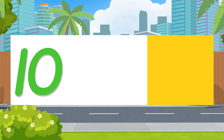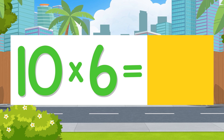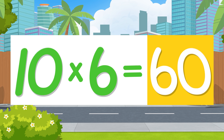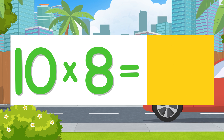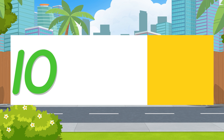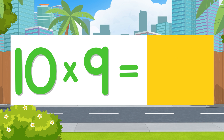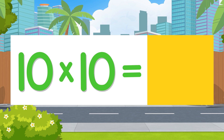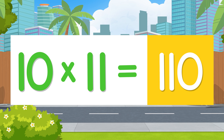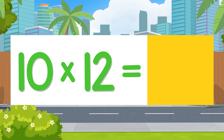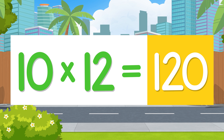Fifty. Ten times six is sixty. Ten times seven is seventy. Ten times eight is eighty. Ten times nine is ninety. Ten times ten is one hundred. Ten times eleven is 110. Ten times twelve is 120.